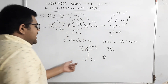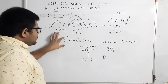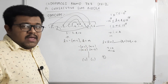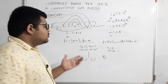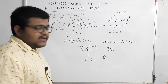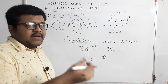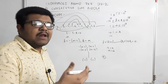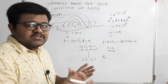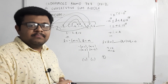Toh input mein diya hai: l ki value = -(n-1), r = n. So I hope ki concept samajh mein aa gaya hoga. Implementation mein as such kuch nahin hai — aap n ki value input lenge, l = -(n-1) print kar denge, aur r = n print kar denge. I hope yeh aapko samajh mein aa gaya hai. Solution code maine comment mein provide kiya hai. Thank you.